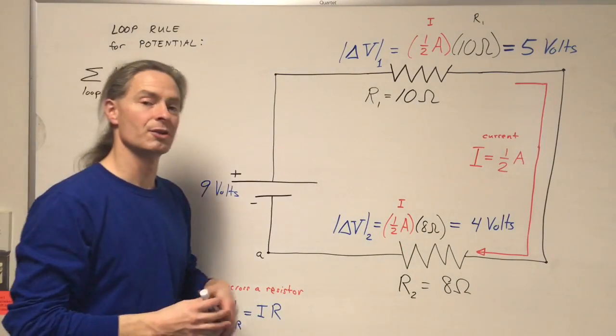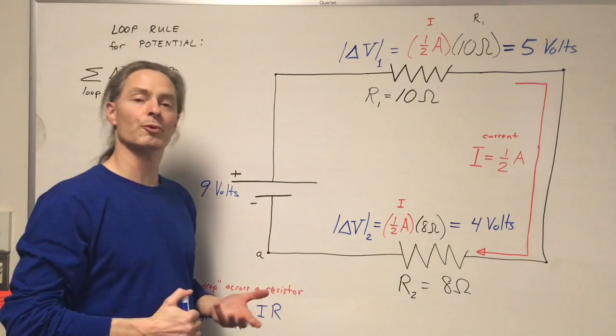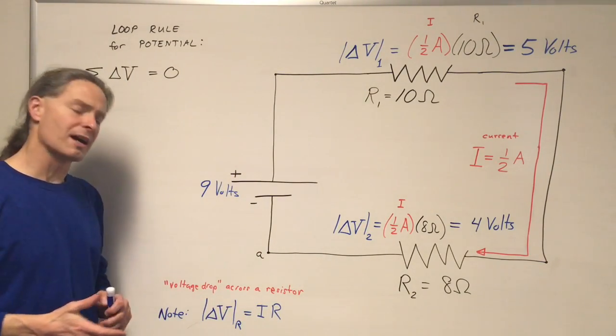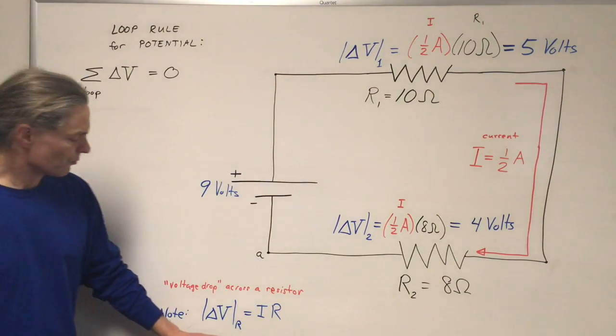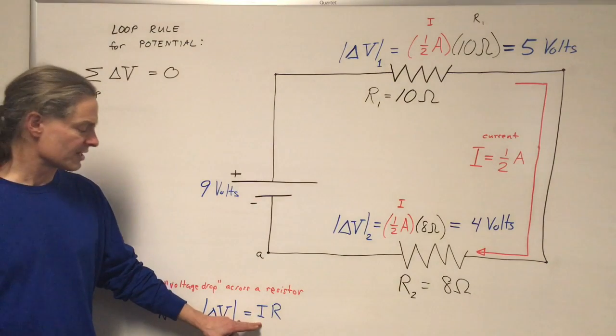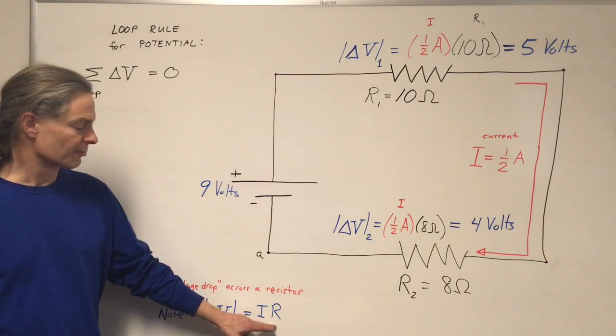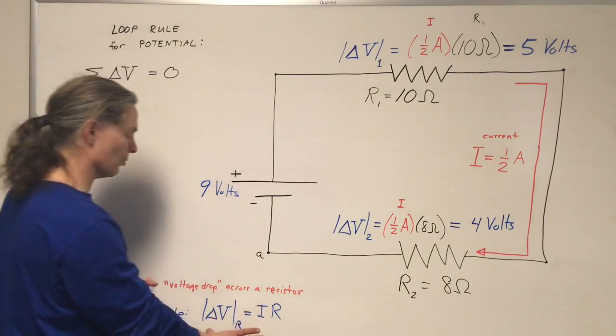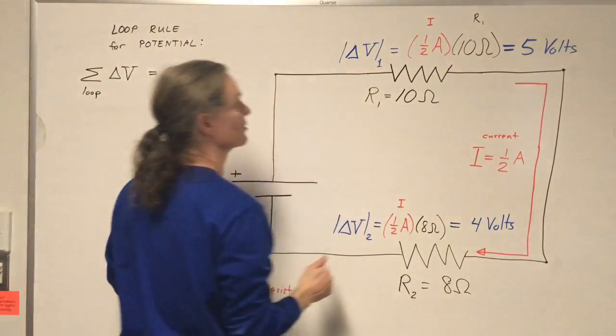I'm going to show you that the loop rule is self-consistent. To do that we need some background knowledge. The voltage drop across a resistor is the product of the current passing through that resistor and the resistance of the resistor. Let's apply that rule for each of these resistors.